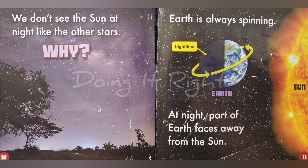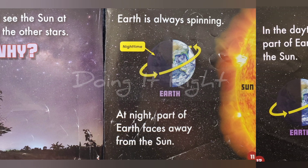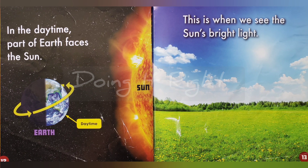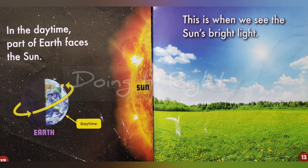We don't see the Sun at night like we see the other stars. Why? The Earth is always spinning. At night, part of the Earth faces away from the Sun. In the daytime, part of Earth faces the Sun. This is when we see the Sun's bright light.